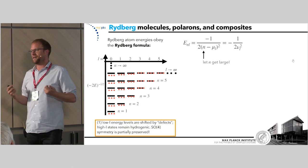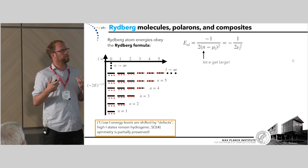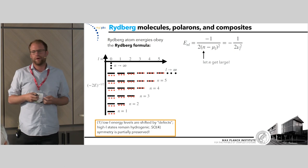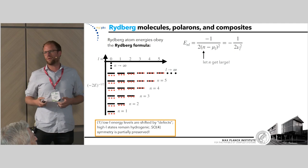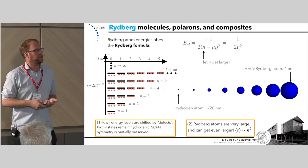As soon as you get to high enough angular momentum, the centrifugal barrier keeps the electron away from the core of the atom and you regain the SO4 symmetry of the hydrogen atom. So for high enough principal quantum number you end up getting n² or nearly n² degenerate states, and this is an important distinction we'll use when talking about Rydberg polarons or Rydberg composites.